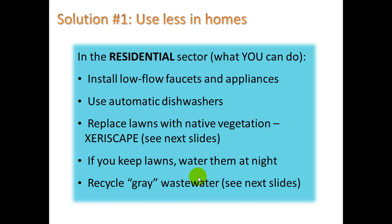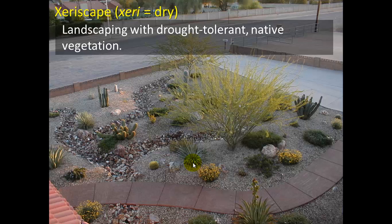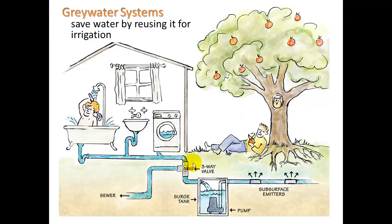Solutions to overusing water include installing low-flow faucets and appliances, using automatic dishwashers which can use less water than hand washing, replacing lawns with native vegetation — called xeriscaping — and watering lawns at night to minimize evaporation. You can also recycle gray wastewater. Xeriscape means landscaping with drought-tolerant native vegetation that's still attractive and appropriate for regions that don't get rain for half the year. Gray water systems redirect water from bathtubs, showers, faucets, and washing machines to water yard trees instead of going to the septic tank.